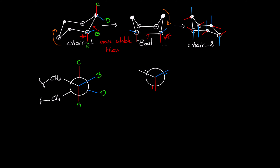If I add substituents A, B, C, and D — A would be here, B would be here, C is on the axial of the back carbon, and D on the equatorial. And here I have the two CH₂s that will continue the cycle.